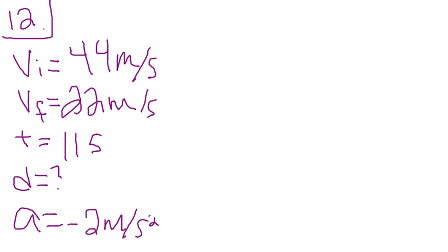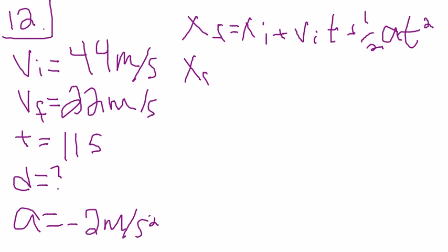Then you can use either the second or third formula to get the displacement. I use the third which is the final position equals the initial position plus the initial velocity times time plus one half acceleration times time squared. And then you just plug in the numbers.